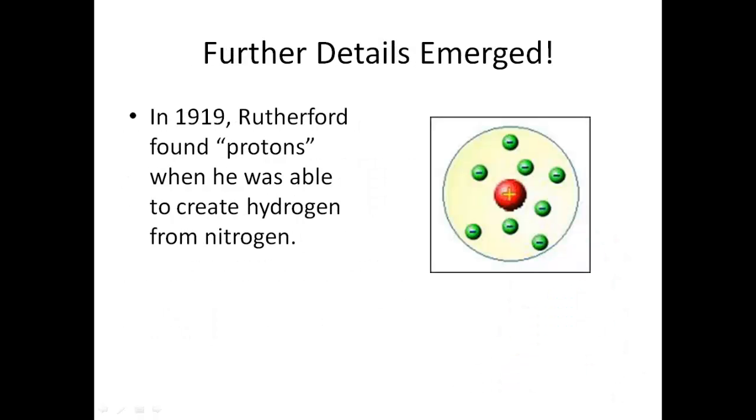Further experiments caused further details to emerge. By 1919, he found protons when he was able to create hydrogen from nitrogen. Hydrogen is the simplest atom, and nitrogen is a more complex atom. By removing subatomic particles, he was able to create hydrogen. It still doesn't give us our modern model, but the discovery of protons helps further details.